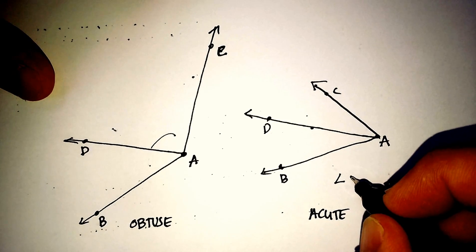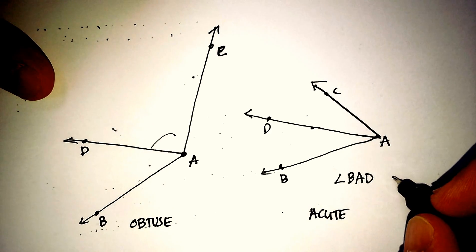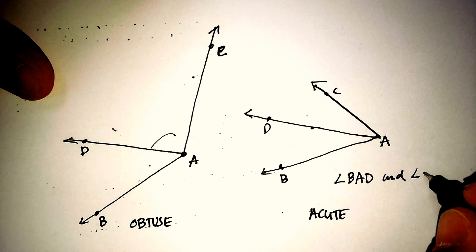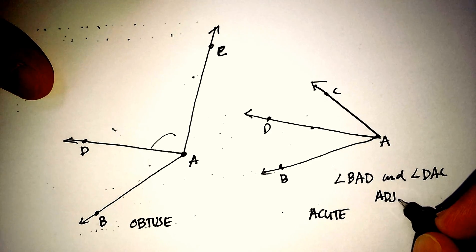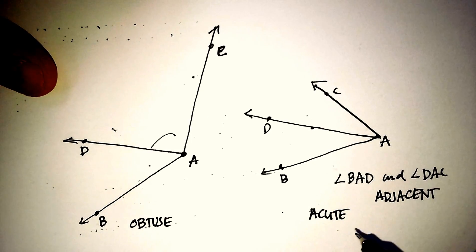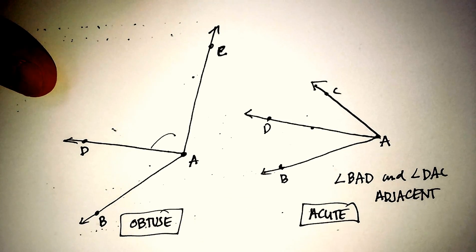Angle BAD and angle DAC are adjacent. But again, we don't know what the sum of them are equal to. We just know that it was right in the middle of an acute angle. And in this case, we know it was right in the middle of an obtuse angle.